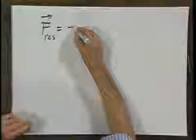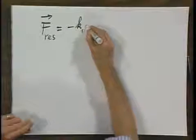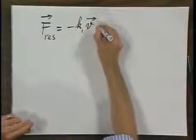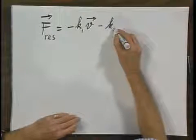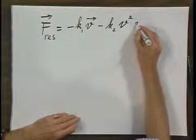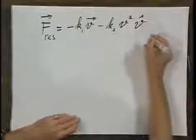Equals minus K1, this is the velocity of that object, minus K2 V squared, and this is the unit vector in the V direction.